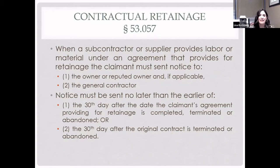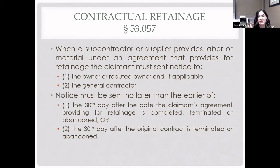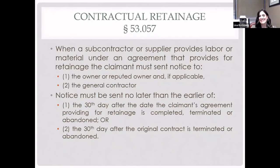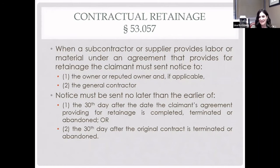For contractual retainage, you have to provide notice to the owner and the general contractor. It must be sent no later than the earlier of the 30th day after the claimant's agreement is completed, terminated, or abandoned, or the 30th day after the original contract is terminated or abandoned. This can get very tricky, and there's a lot of discrepancy in the courts and cases about it, but remembering that you do need to send this notice for contractual retainage is important.